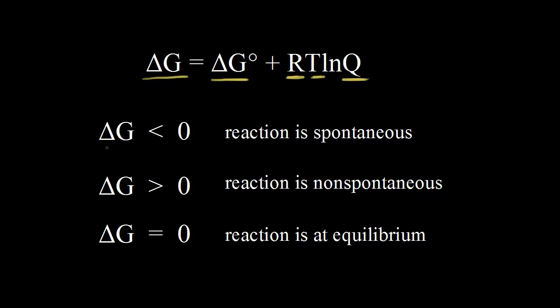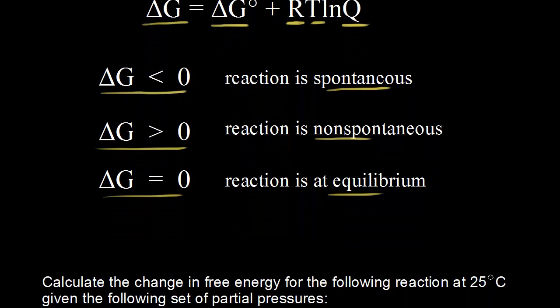When delta G is less than zero, so when delta G is negative, the reaction is spontaneous in the forward direction. When delta G is greater than zero, so when delta G is positive, the reaction is non-spontaneous in the forward direction. And when delta G is equal to zero, the reaction is at equilibrium. Let's apply this equation to an example.